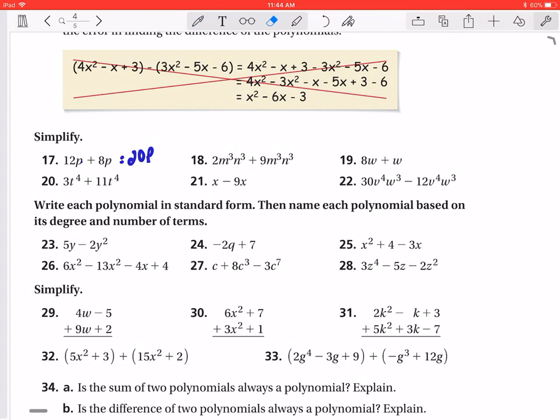I could also, again, I could factor out that P. So then I could say, this would be in parentheses, 12 plus 8, and then P would be outside. Well, 12 plus 8 gives us 20. So this would be 20P, right?